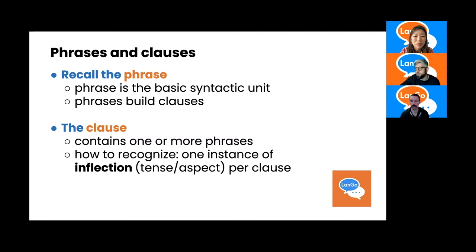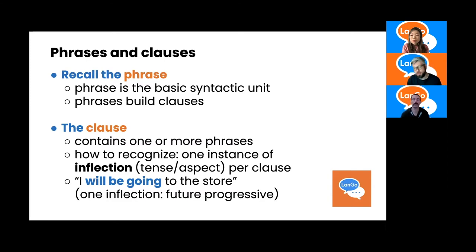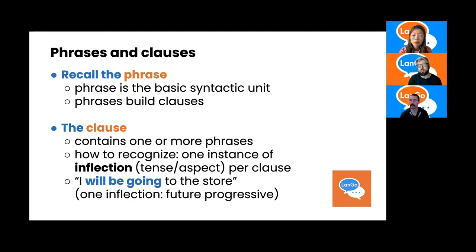More on that on the blog soon. An example: 'I will be going to the store' is one inflection. You might think will, be, and going are each separate inflections, but those three words together inflect future progressive. That's what we mean when we say there's one inflection per clause — we're combining tense, aspect, and mood. If your language expresses mood, we'd probably be combining that as well.